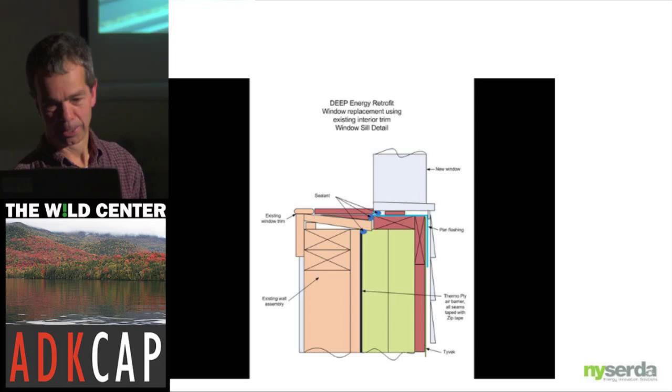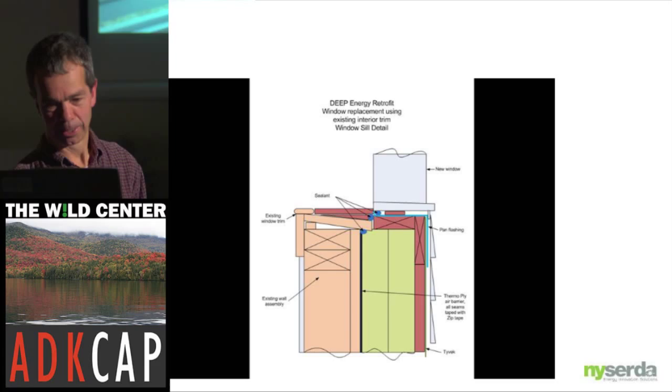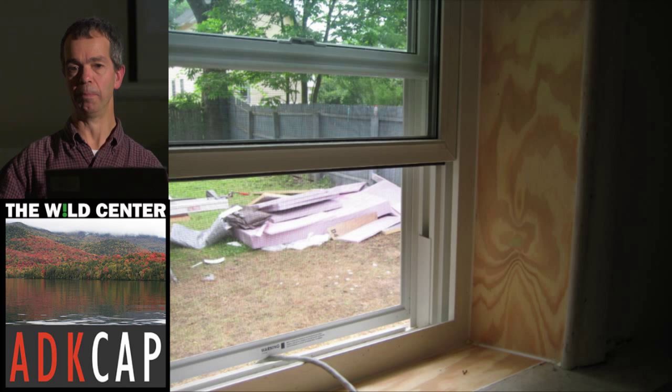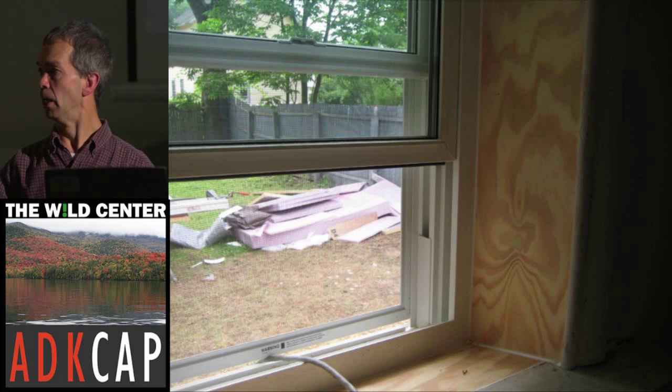Here's the sash weight cavity when we took the siding down. That cavity gets avoided when a typical window replacement guy comes — he'll just do the rough opening of what was there and pop it in. But with our approach, the window buck takes that cavity up and it's gone.